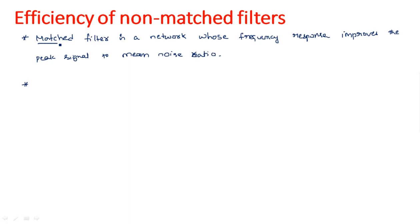A matched filter is a filter which exactly matches the required component — it gives the required signal and eliminates all other unwanted signals. The IF amplifier in the receiver is key: the bandwidth of the IF amplifier equals the bandwidth of the entire receiver, because it selects the required frequency components and eliminates all others.